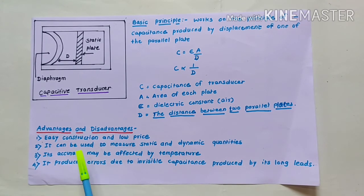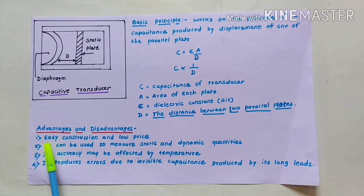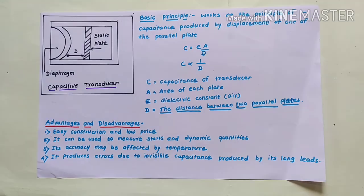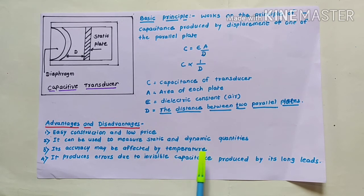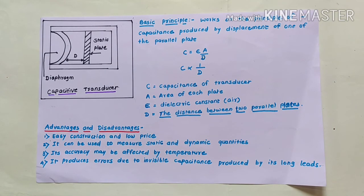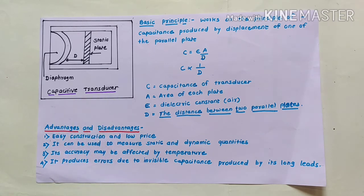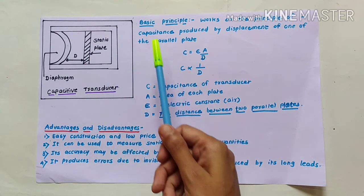Now let us see the advantages and disadvantages of the capacitive transducer. Advantages: it is easy to construct and has a low price; it can be used to measure both static and dynamic quantities. Disadvantages: its accuracy may be affected by temperature; it produces errors due to stray capacitance produced by its long leads. Remember that the capacitive transducer is a passive type of transducer.